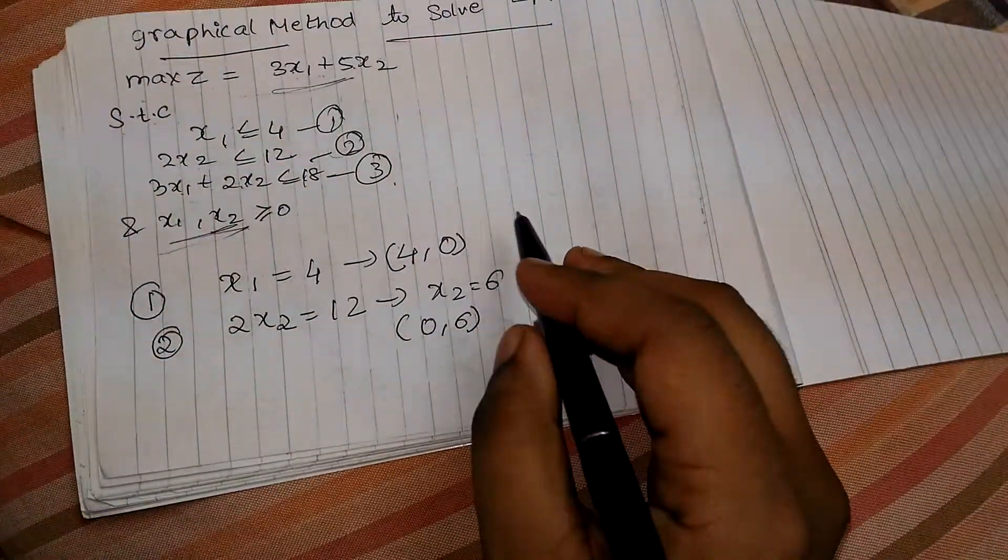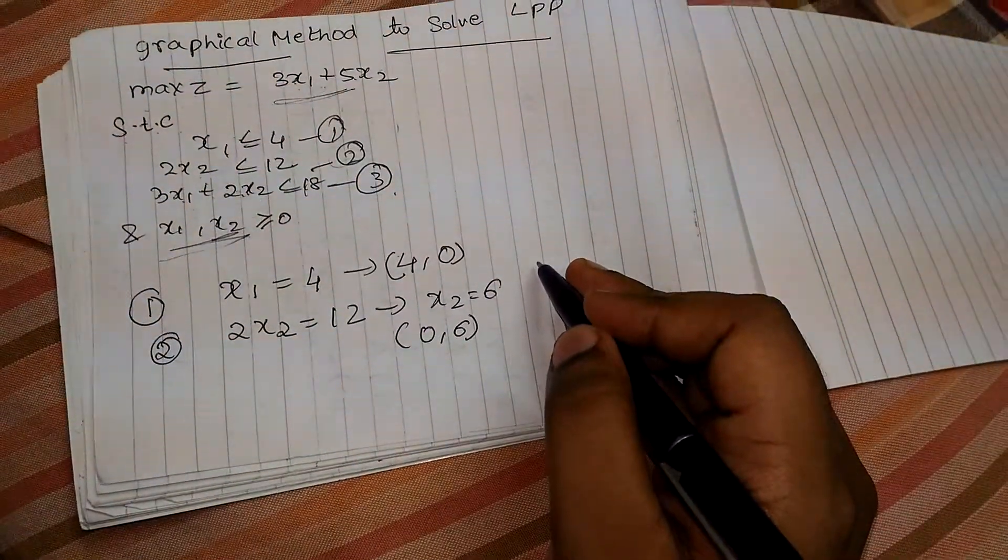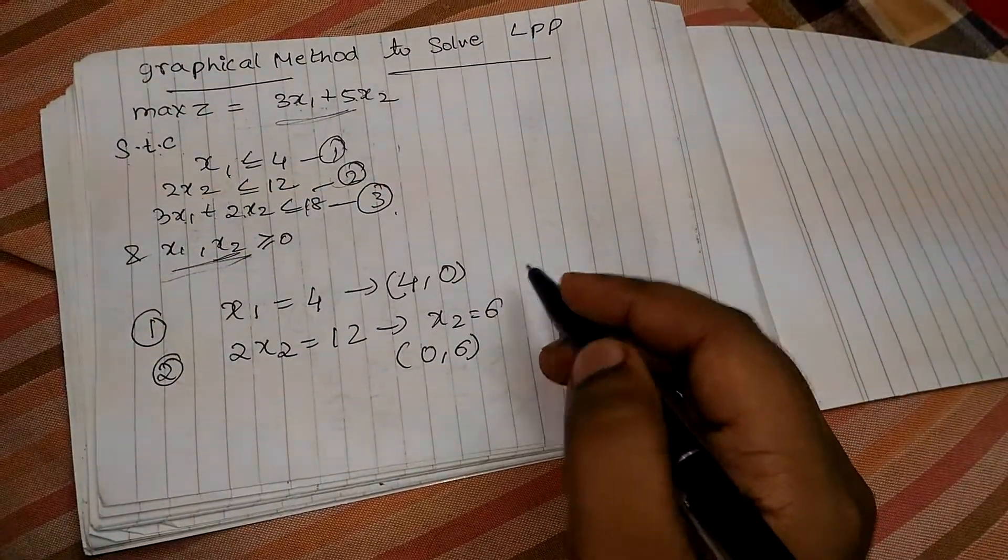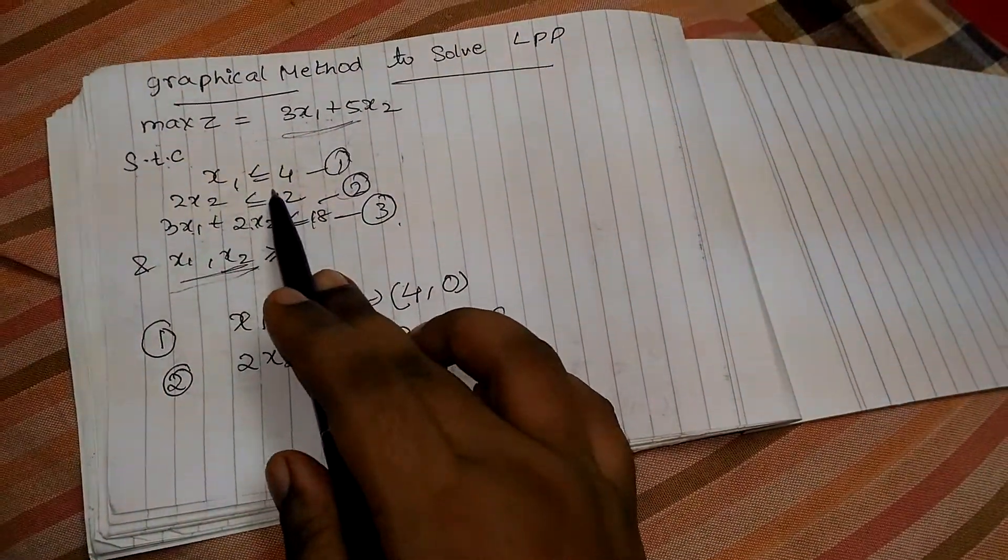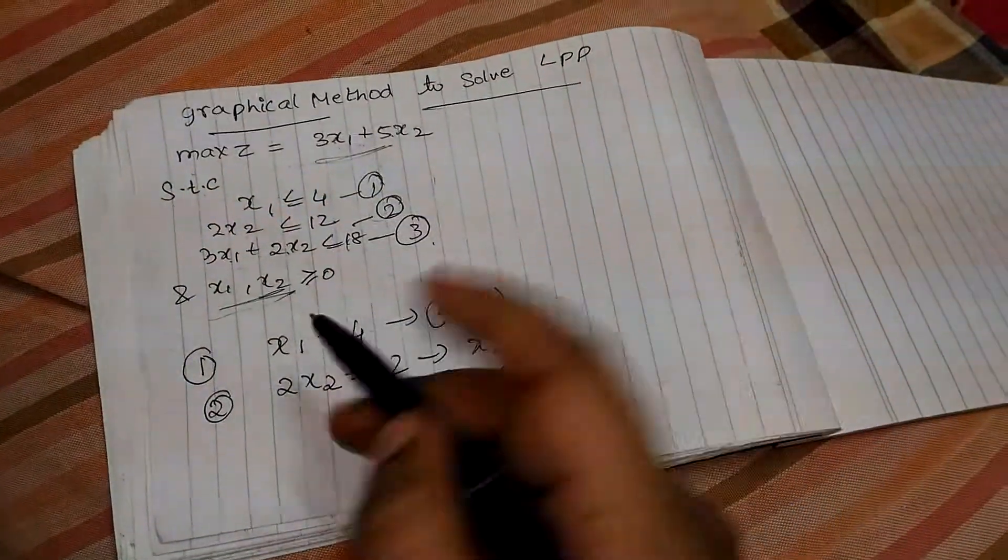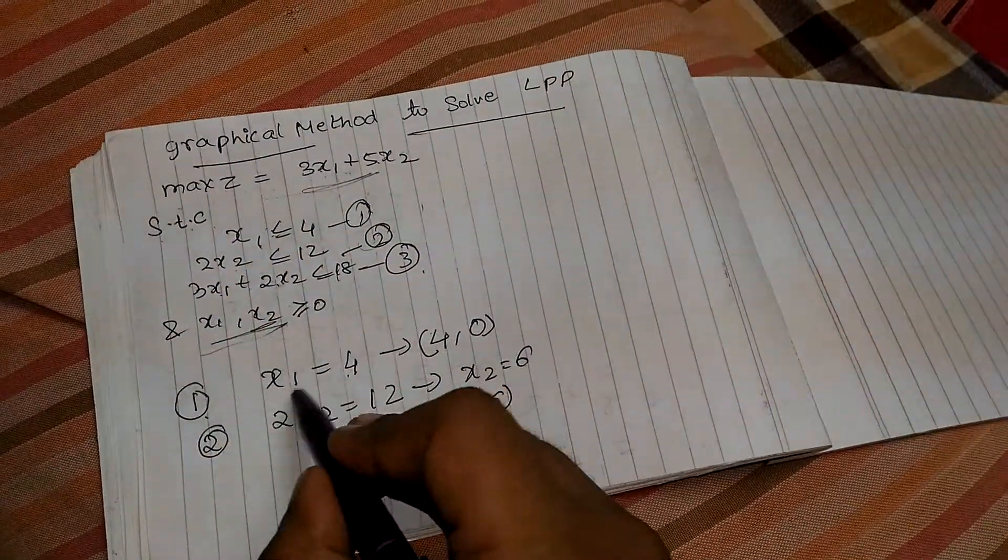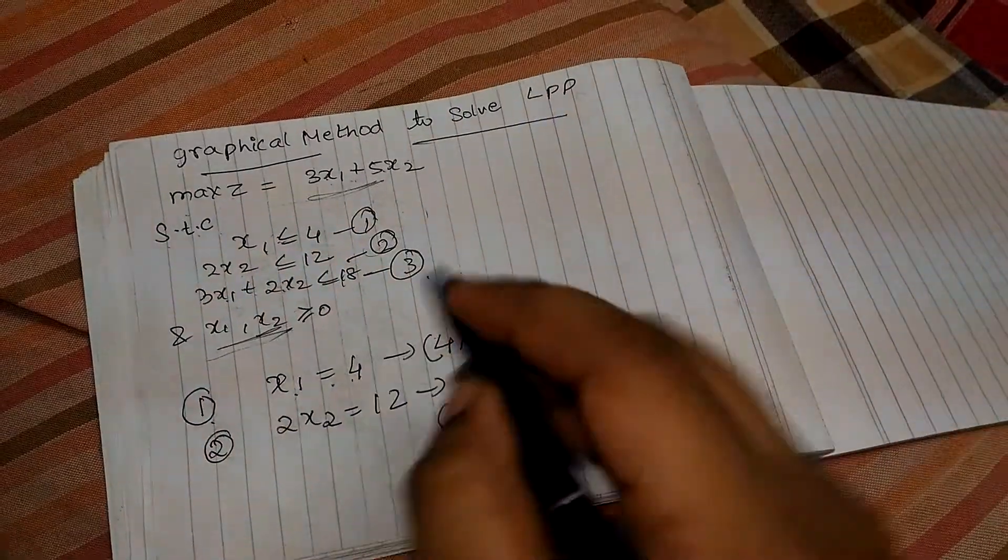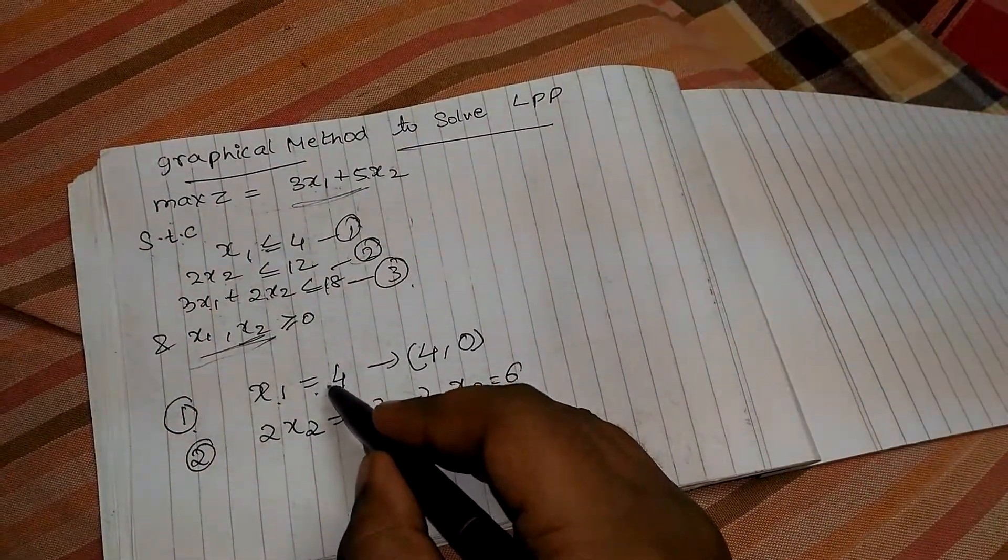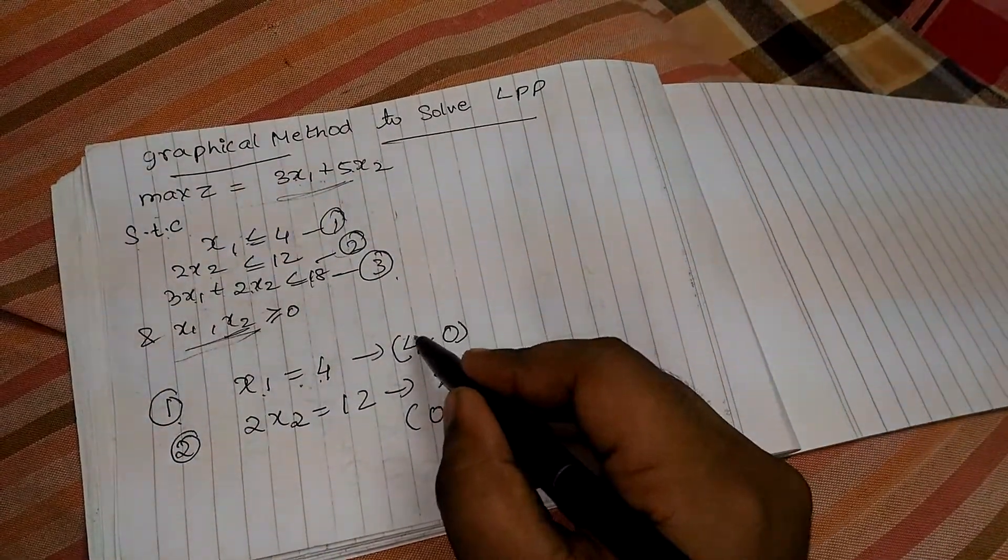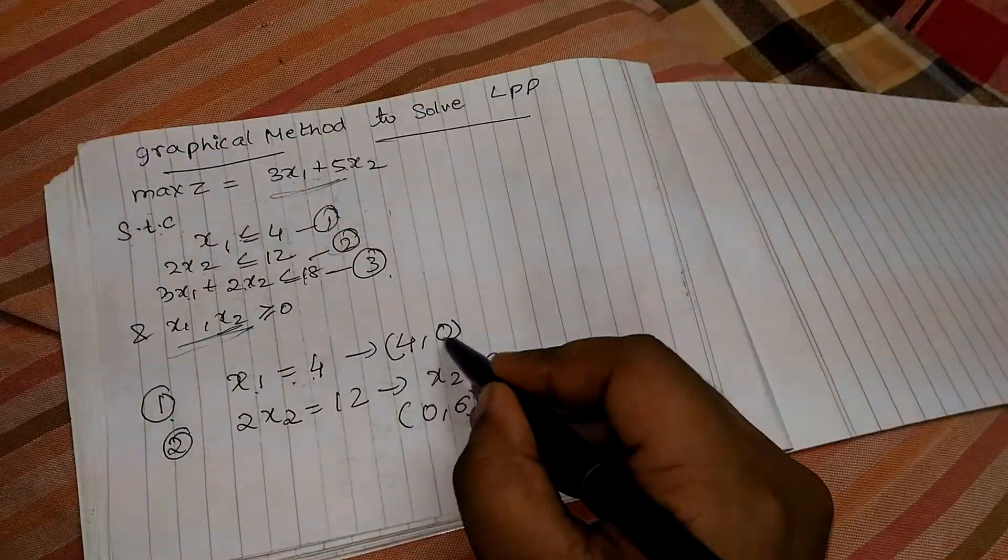So we need certain points to plot the graph, which is x and y axis points. We can transform this equation as points by the following. x1 equal to, we will write this equation as x1 equal to 4. Here there is no x2 term, that is y term. So instead of y term, we will write it as 4, 0.